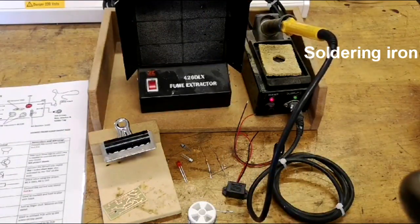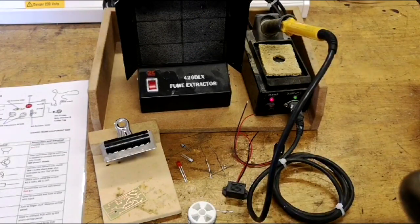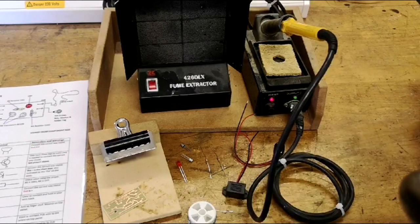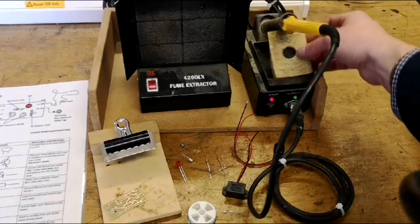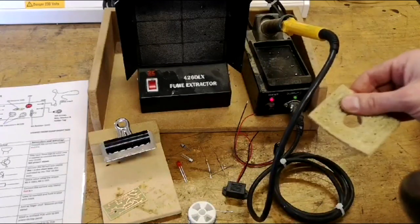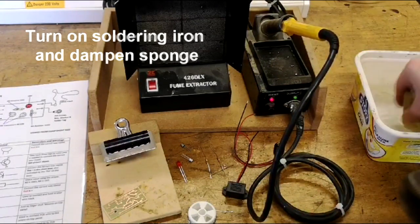Now a soldering iron gets very, very hot. Solder is a type of alloy that melts once the soldering iron touches the tip. This is a sponge which we use for cleaning the tip of the soldering iron. As you can see, at the moment it is bone dry, so the first thing I need to do is put some water on my sponge.